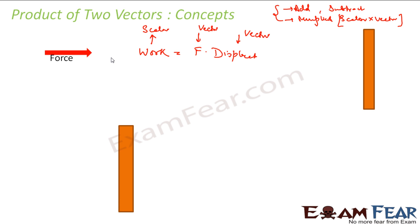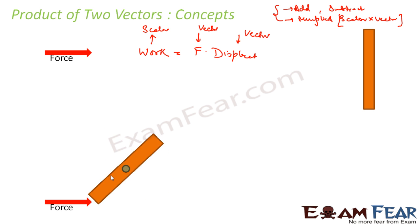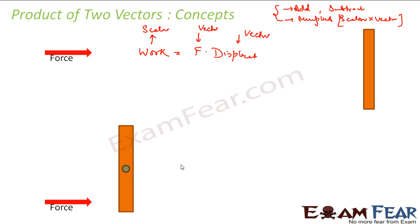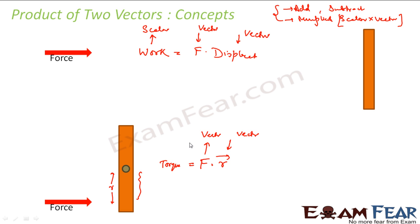Let's take another scenario. We have a similar wooden log. This time we fixed it with a nail on the wall. Now again, let's apply force. Now what will happen? This will rotate — it didn't move, it rotated. So in this case also, we had the R vector, that is the distance vector from the center. I had this force and this R vector. I multiplied these two and I got something called torque. Here, my force is a vector, this R is a vector, and what I get is also a vector.